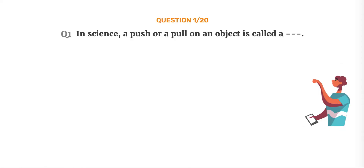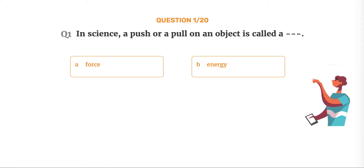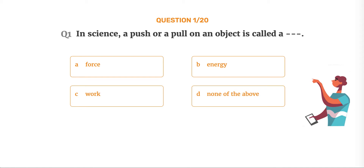Question number 1. In science, a push or a pull on an object is called a dash. Option A: Force. Option B: Energy. Option C: Work. Option D: None of the above.